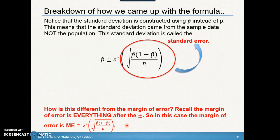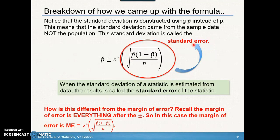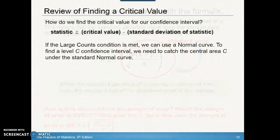The standard deviation here is constructed using p-hat instead of p, meaning it came from the sample data, not the population. Standard deviation refers to a population standard deviation, but since this comes from a sample, we have a different name for it: the standard error. The standard error is just another name for the standard deviation when estimated from sample data. The margin of error is everything after the plus-or-minus sign, which includes the critical Z score. So the standard error is just the standard deviation portion without the Z score.